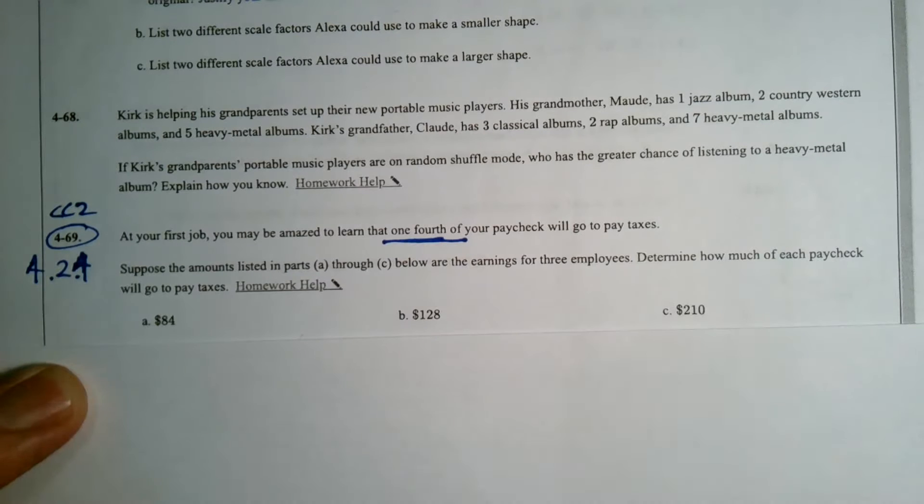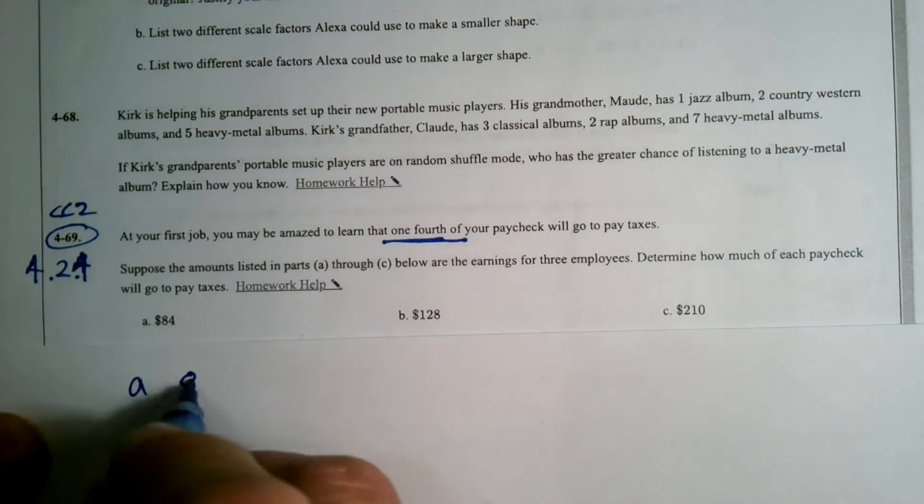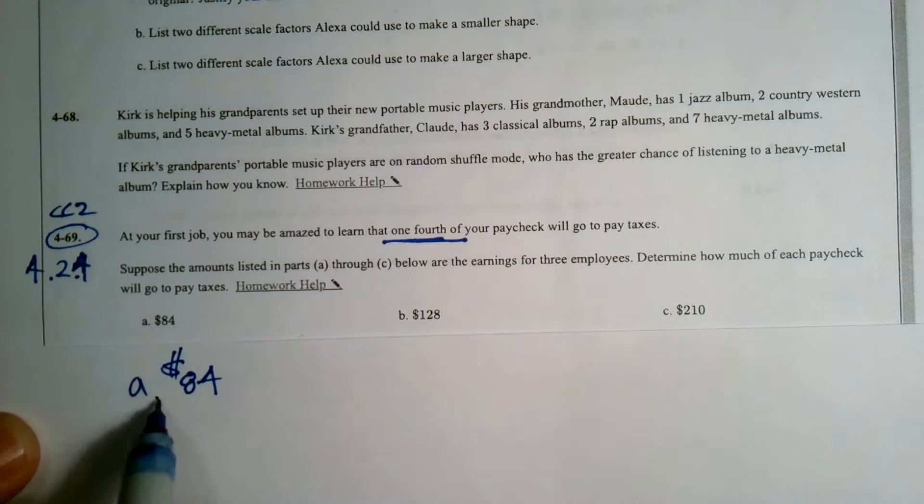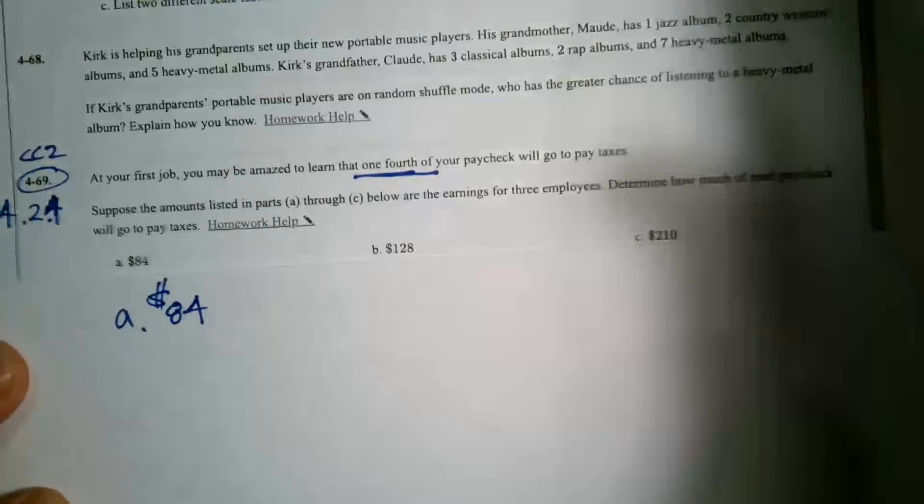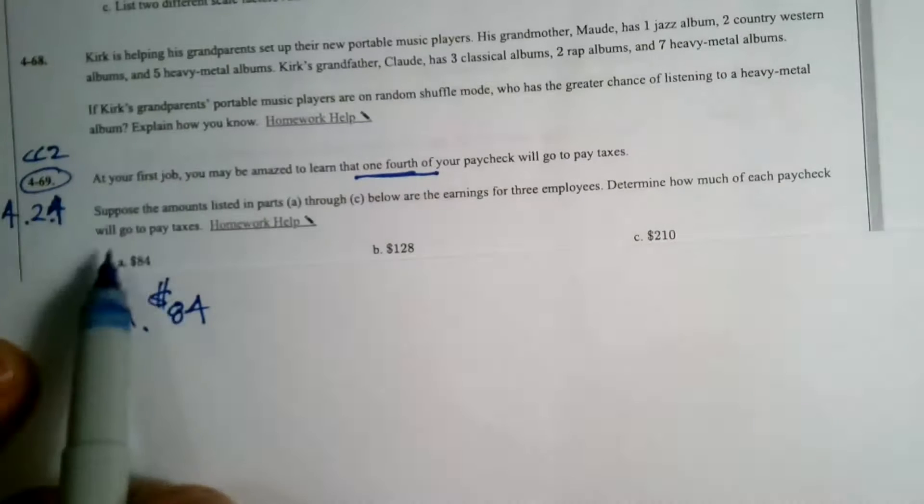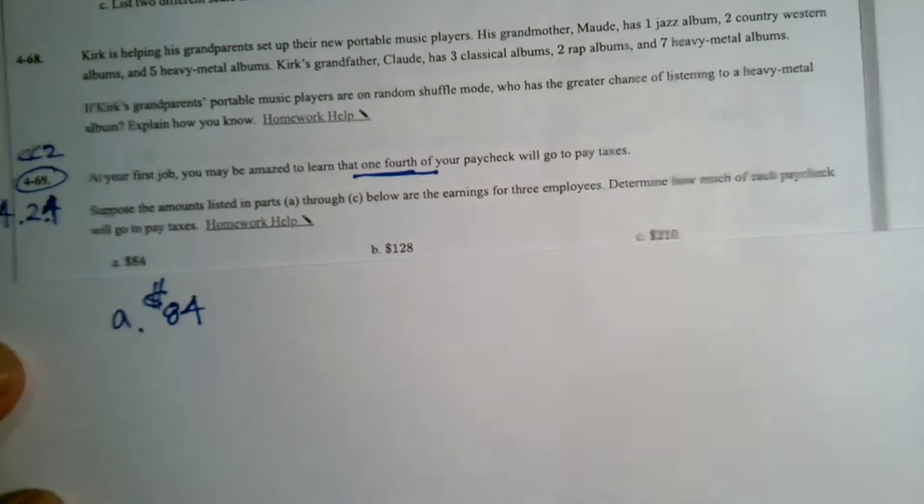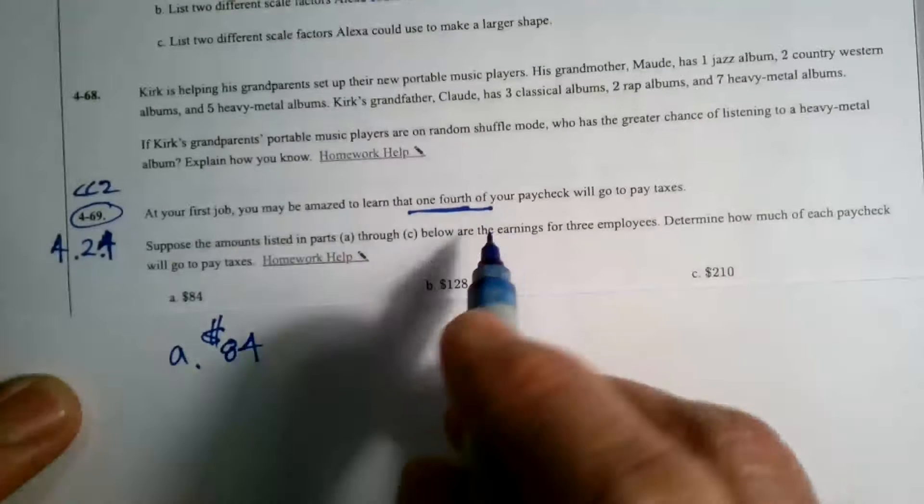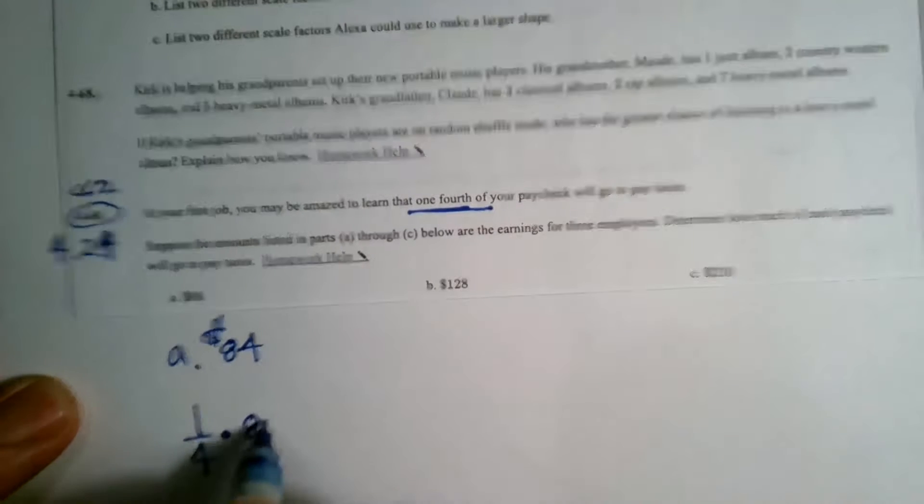So we have three different problems. It's not a multiple choice. We have A, our first employee makes $84. It wants us to determine how much is going to go to taxes. So my first paycheck is $84. How much of that's going to go to taxes? Well, it says one fourth of it. So it's one fourth of 84.